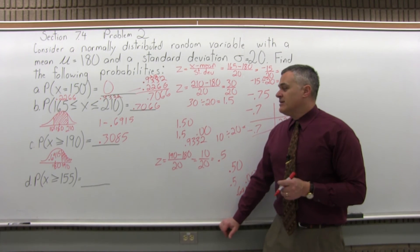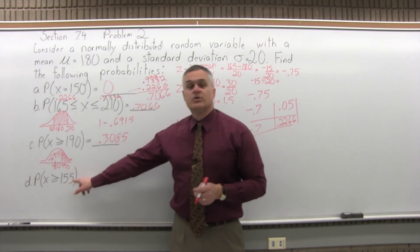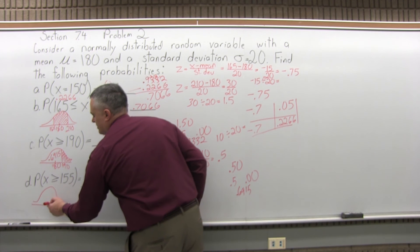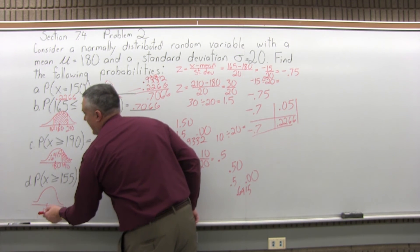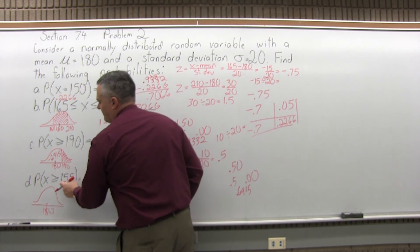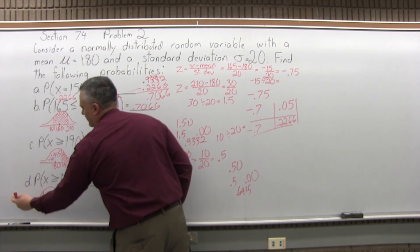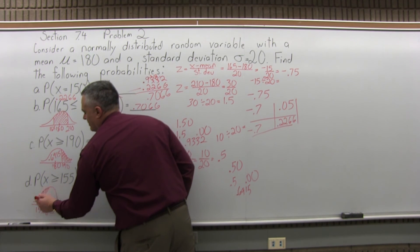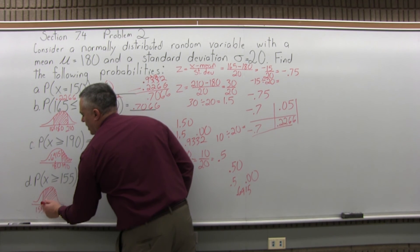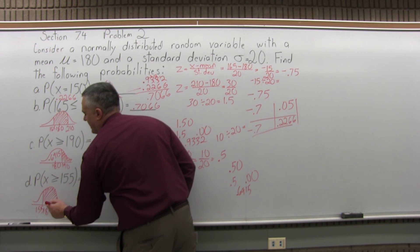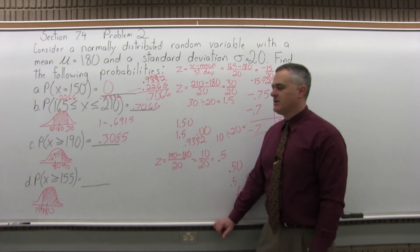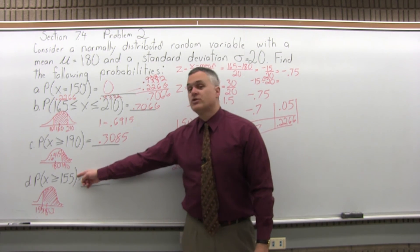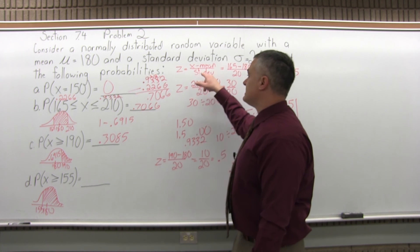Part D asks for the probability that X is greater than or equal to 155. Visually, the bell curve has mean 180 in the middle. Since 155 is a little less than 180, it falls to the left. This is a greater-than question, so we want the portion of the bell curve to the right of 155. We can't look up 155 directly — we must convert it to a Z-score.